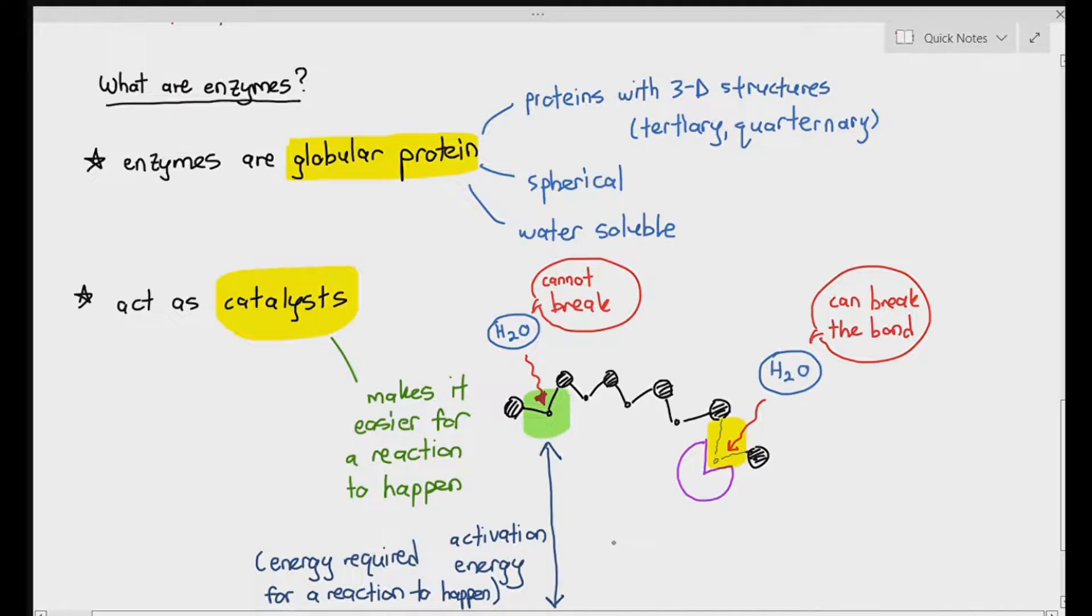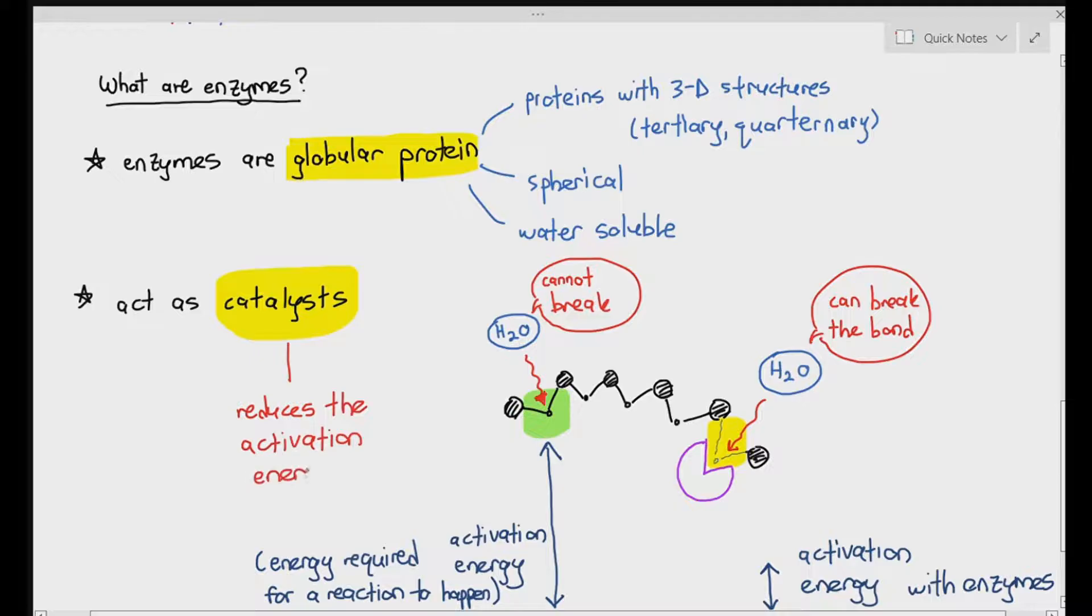No, it does not have to because with the help of the enzyme, the enzymes actually weaken the bond. Therefore, the activation energy needed to break the glycosidic bond is much lower. Enzymes make it easier for a reaction to happen by reducing the activation energy for a reaction to occur. That's what enzymes do.